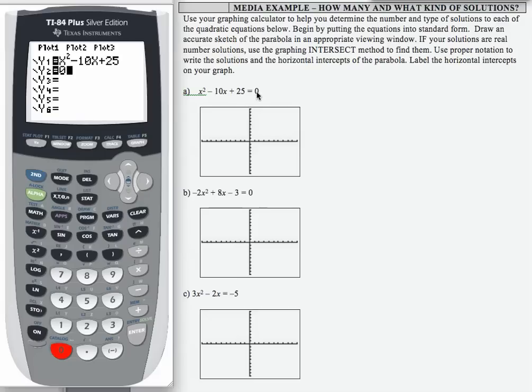So when our equation is set to 0, what we are finding when we're solving the equation, and this is any equation, not just a quadratic, is we are finding the horizontal intercepts. Because when the output is 0, we are on the x axis or the horizontal axis.